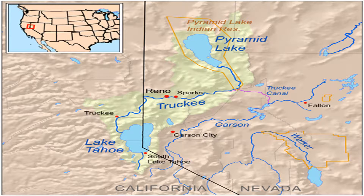The Lahontan cutthroat trout is a species of trout native to the Truckee River. It very quickly became a common food source for Native Americans and white settlers alike. The significance of the fish should have led these people to try and preserve it, but that was not the case. Damming and fishing went on to harm the fish's ability to survive, ultimately depleting the Pyramid Lake population by 1940.